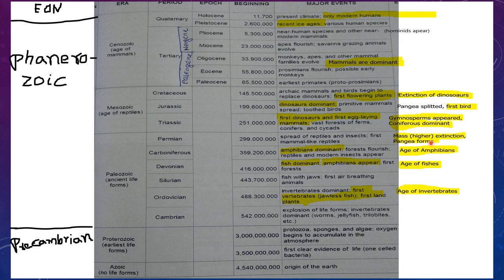Next is Mesozoic Era. In Mesozoic Era, three periods are there: Triassic, Jurassic, and Cretaceous. In Triassic, the first dinosaurs and first egg-laying mammals appeared, with forests of ferns, conifers, and cycads. Gymnosperms appeared and conifers were dominant. You have to remember: first dinosaurs appeared in Triassic, gymnosperms appeared at Triassic, and conifers are dominant in Triassic.